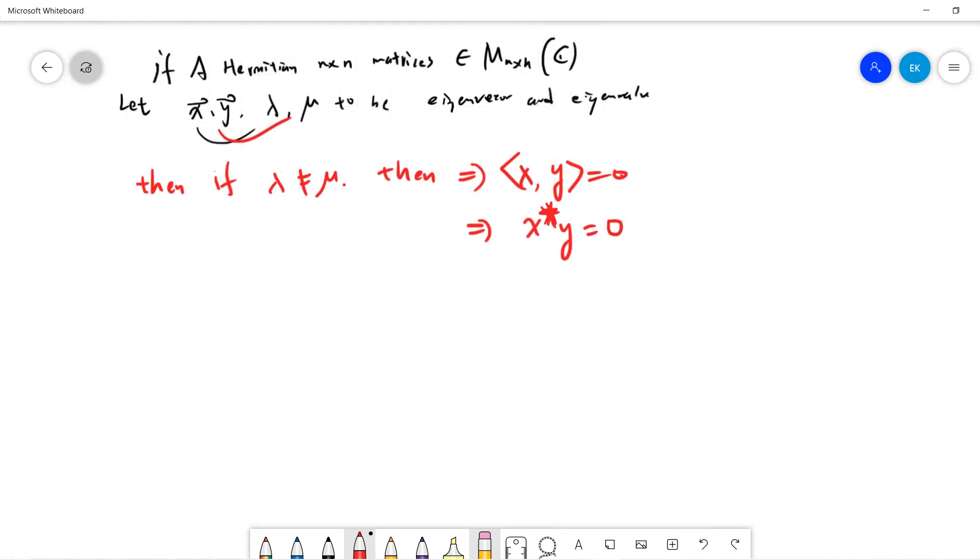The proof is very easy. We have Ax equals lambda x and Ay equals mu y. So we do the dagger, we have this.